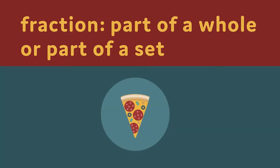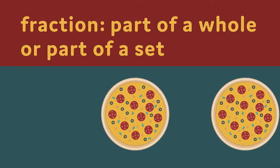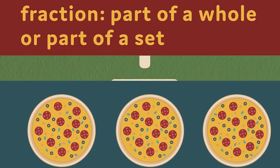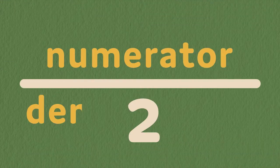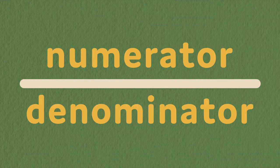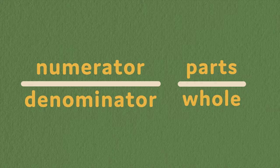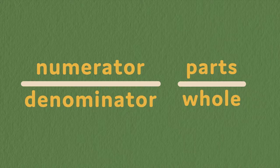A fraction represents a part of a whole or a part of a set. Every fraction has a numerator and a denominator. The numerator stands for the number of parts being considered. The denominator stands for the number of equal parts that make up the whole.